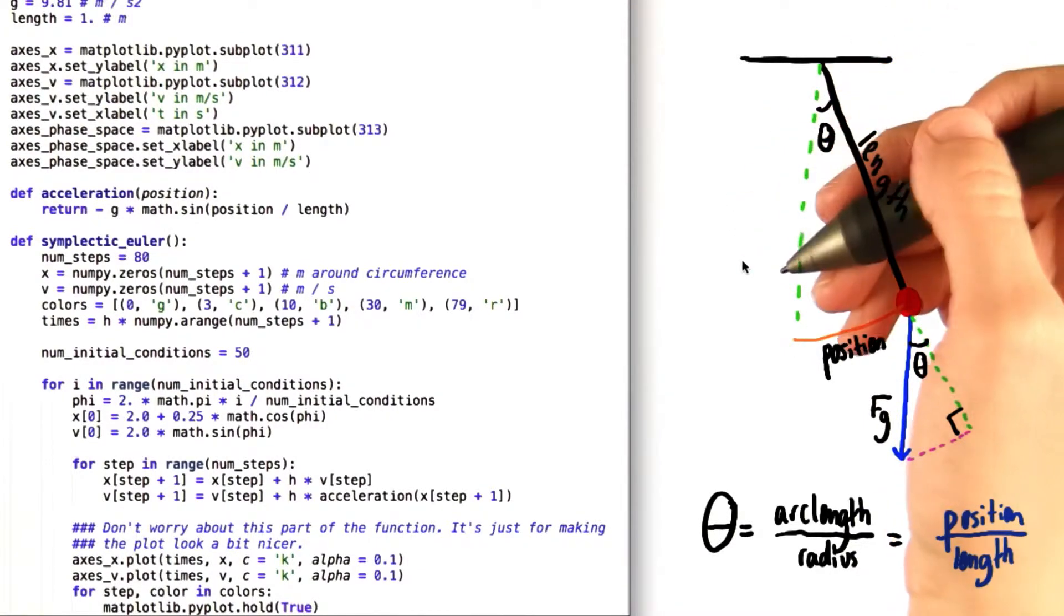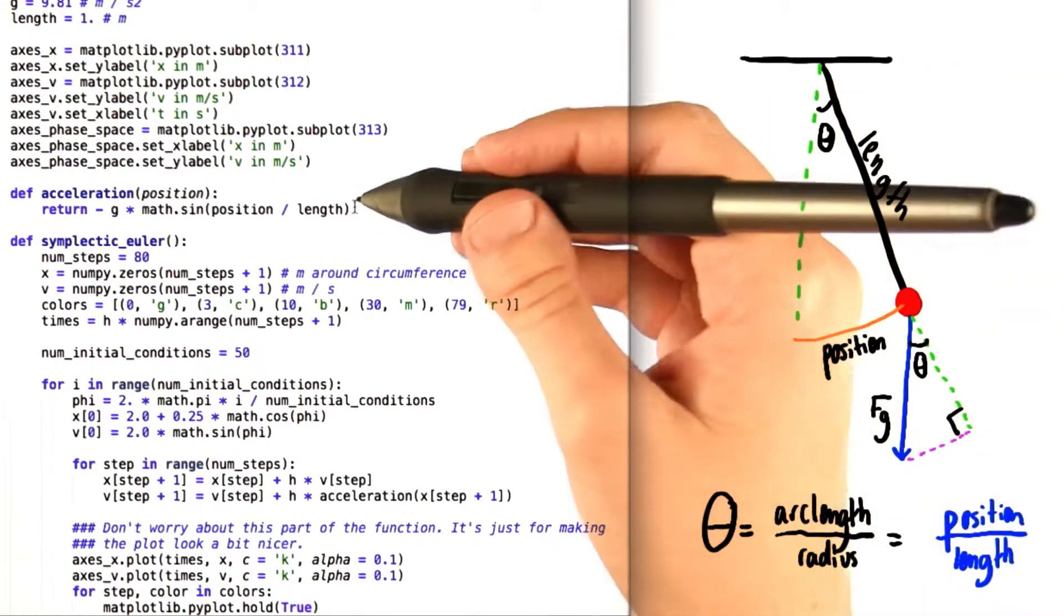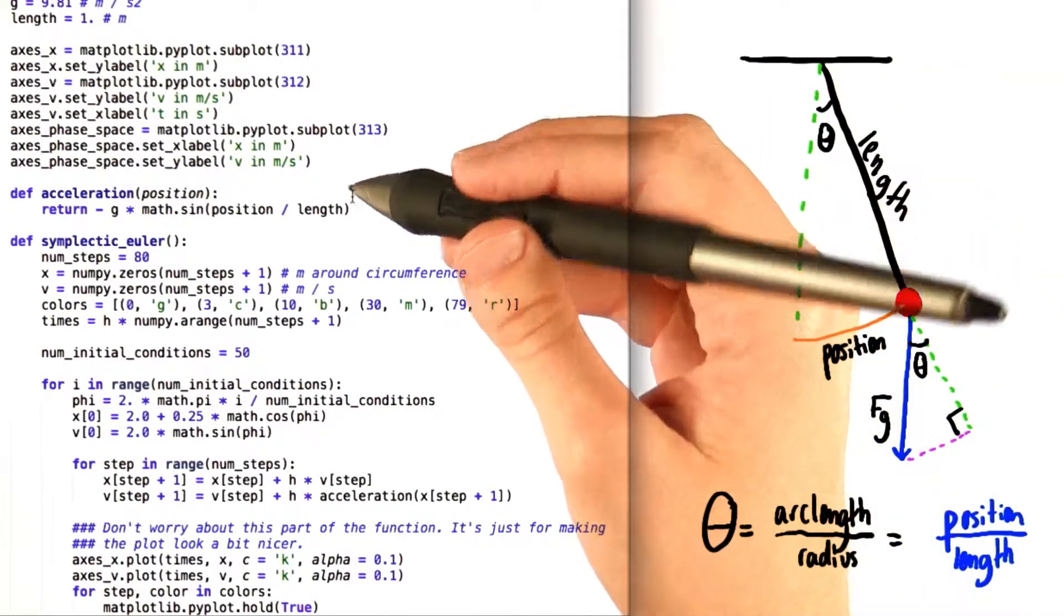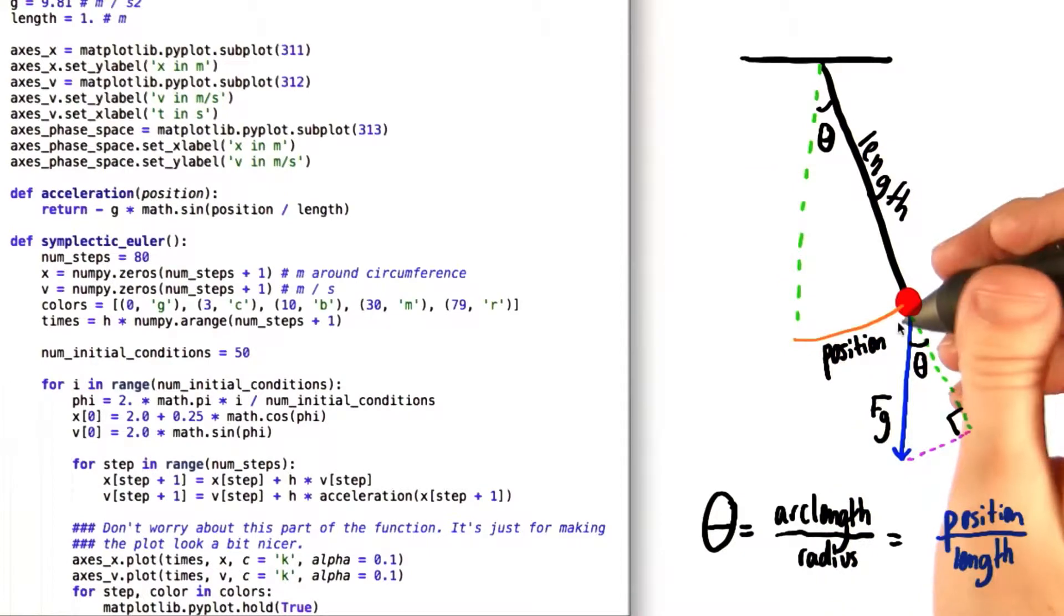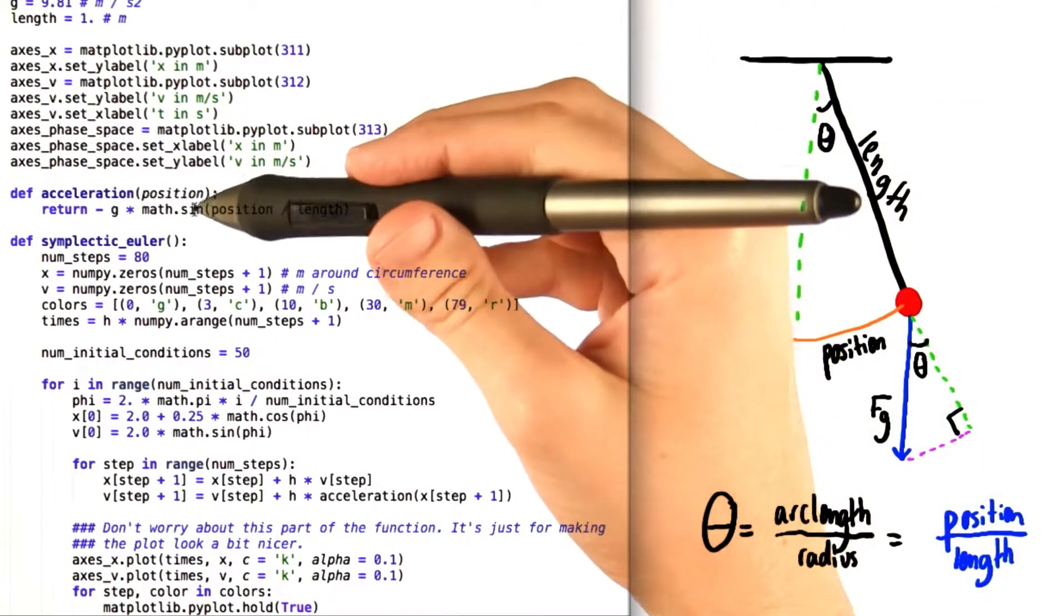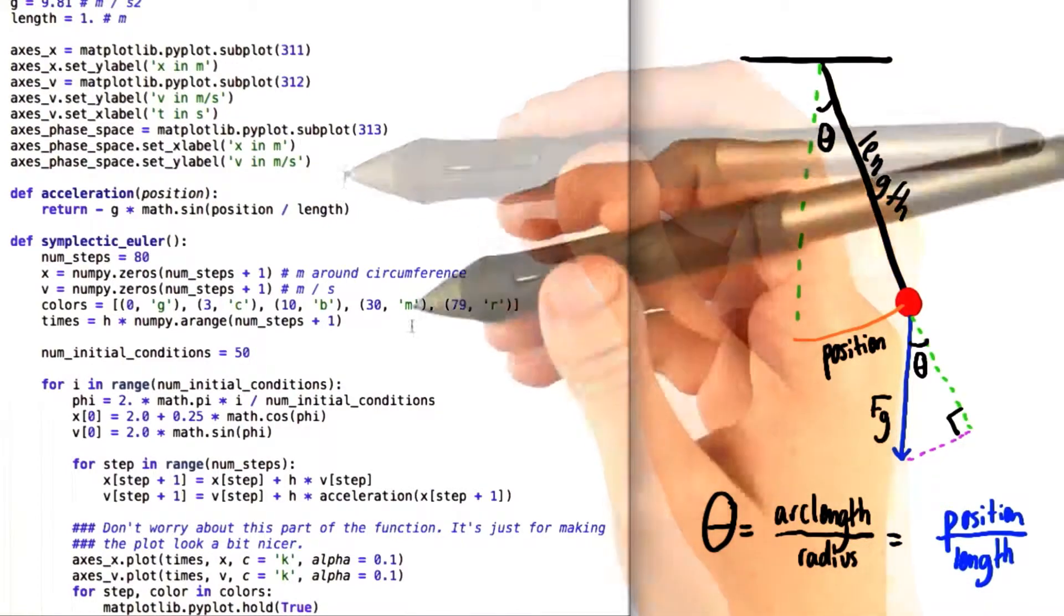So since theta equals position over length and we want the sine of theta, we fill in our definition for acceleration as negative g or magnitude of the acceleration due to gravity times the sine of position over length.